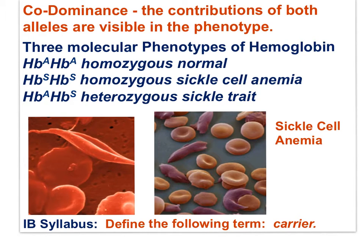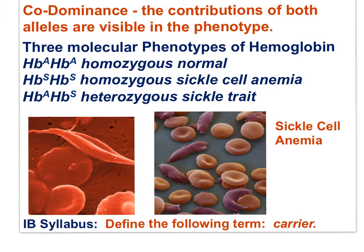Sickle cell anemia is a disease resulting from a mutation to the gene for hemoglobin. It displays a codominant heredity pattern because the heterozygote has a phenotype where both alleles play a role. Someone with genotype HBA-HBA has normal hemoglobin. Someone with HBS-HBS suffers from sickle cell anemia. Someone with the HBA-HBS genotype does not have sickle cell, but by virtue of both alleles, has some resistance to the malarial parasite.